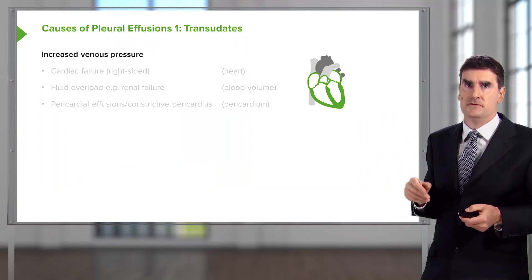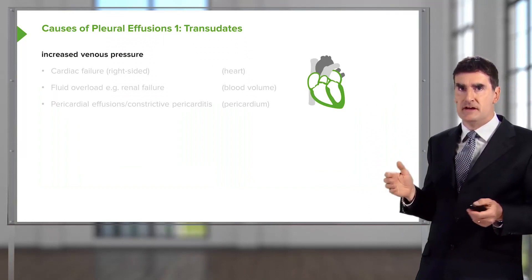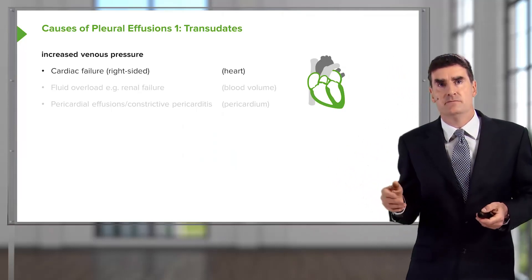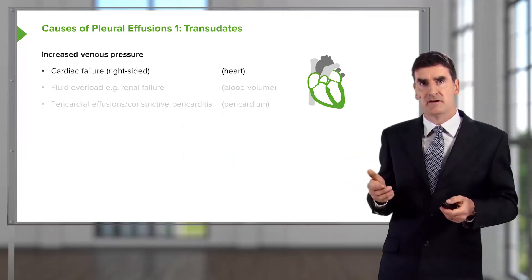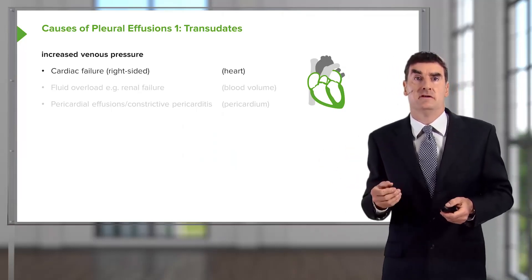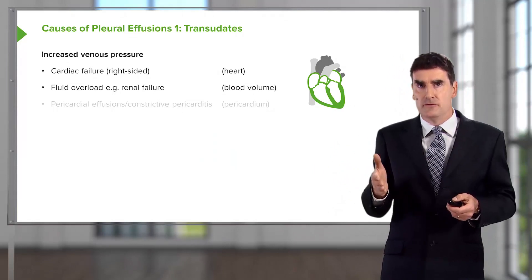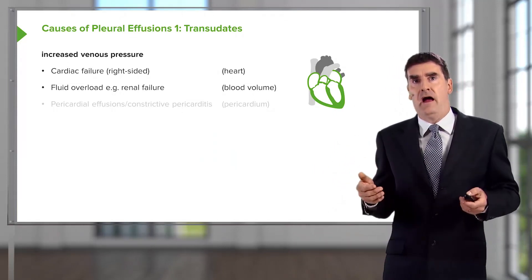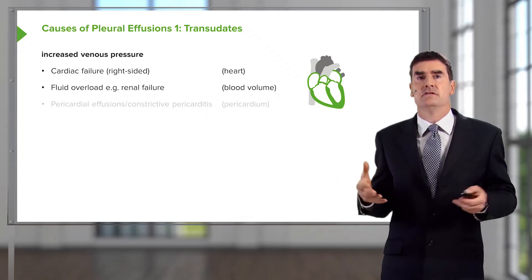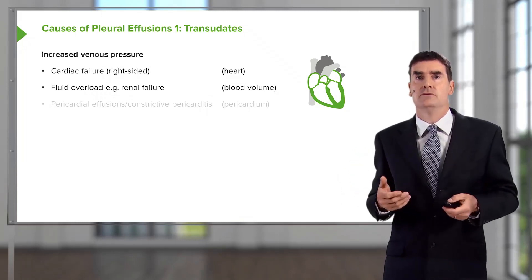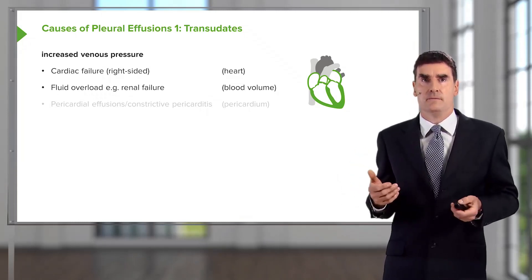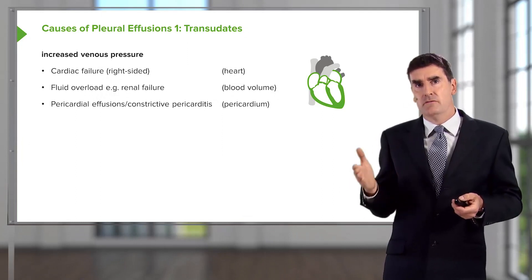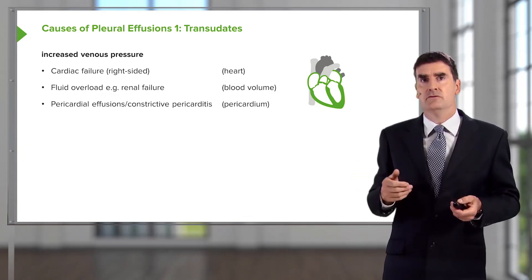So what are the causes of pleural effusions? With transudates, you can have increased venous pressure, which might be due to cardiac failure — mainly right-sided but also left-sided cardiac failure. It could be fluid overload: somebody with renal failure who has an excess amount of fluid in the system may get pleural fluid forming. Pericardial disease also causes pleural effusions and is often forgotten as a cause.